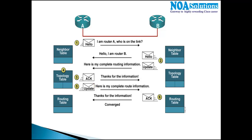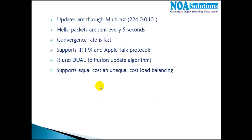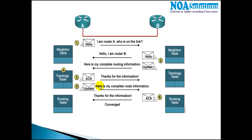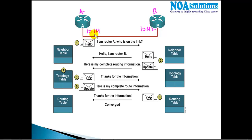Let's try to understand how the EIGRP process works. What happens the first time when you advertise the networks? Let's say we have two routers — Router A and Router B — with IP addresses 10.1.1.1 and 10.1.1.2. The first time we advertise the interface using a network command, like we did in RIP.